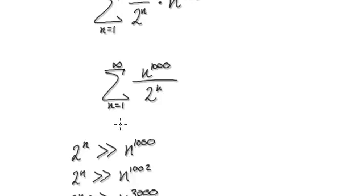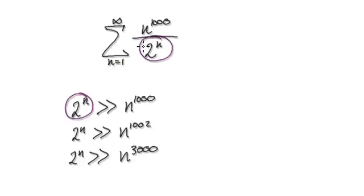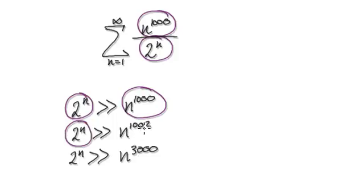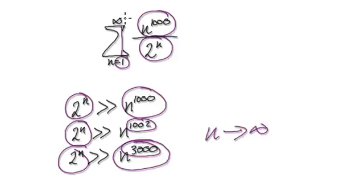The trick to doing this is to realize that 2 to the power of n will be much, much bigger than n to the power of 1,000. In fact, 2 to the power of n would be much, much bigger than n to the power of 1,000 and 2. 2 to the power of n would be much, much bigger than n to the power of any power, as n tends to infinity.